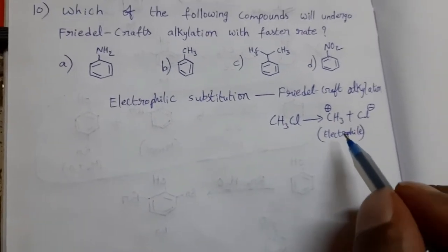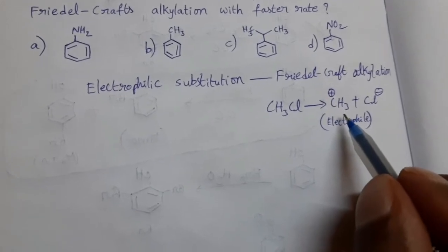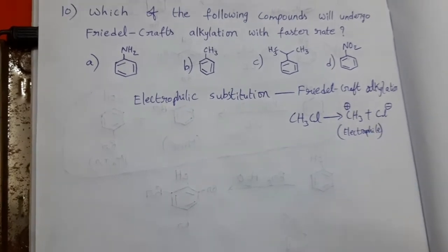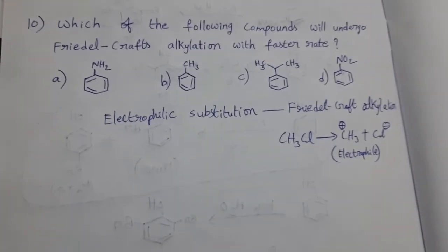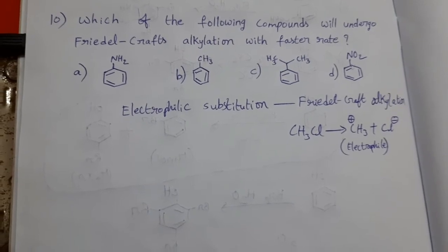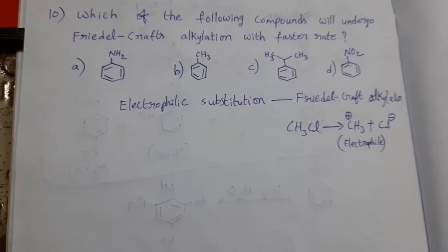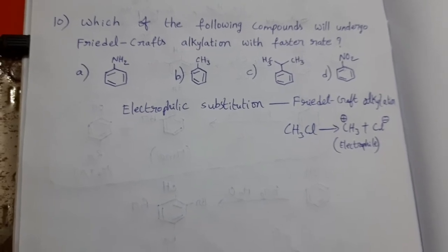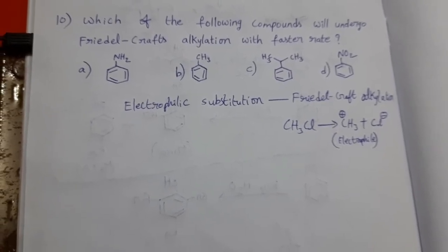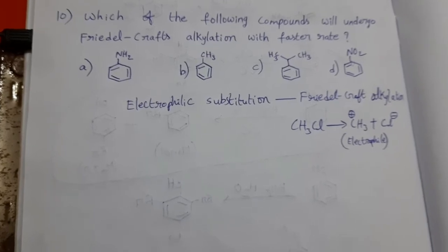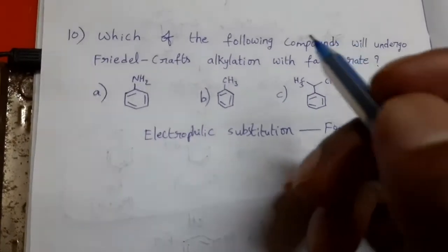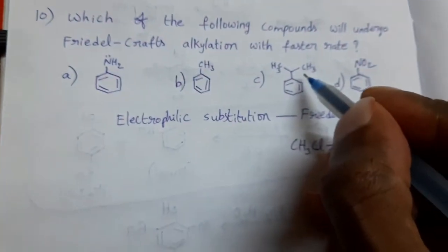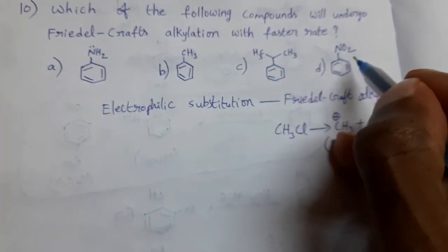For the substitution of this electrophile, we need electron density on the benzene ring — meaning an electron-donating group must be present. Then electrophilic substitution takes place at a faster rate. If an electron-withdrawing group is present, electrophilic substitution takes place at a slower rate. The given options include aniline (NH2), CH3, a propyl group, and NO2.